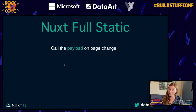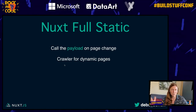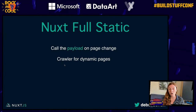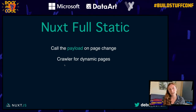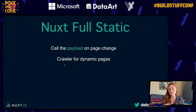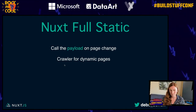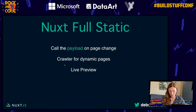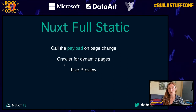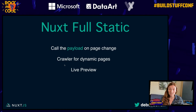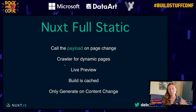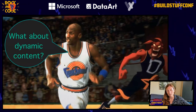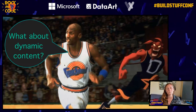Nuxt Full Static calls the payload on page change. There's a crawler for dynamic pages — if you've got blog posts and link to them, it just crawls those pages. You don't have to do anything to generate dynamic pages as long as they're linked. There's also a live preview so you can preview before it deploys. The build is cached and you only generate on content change.